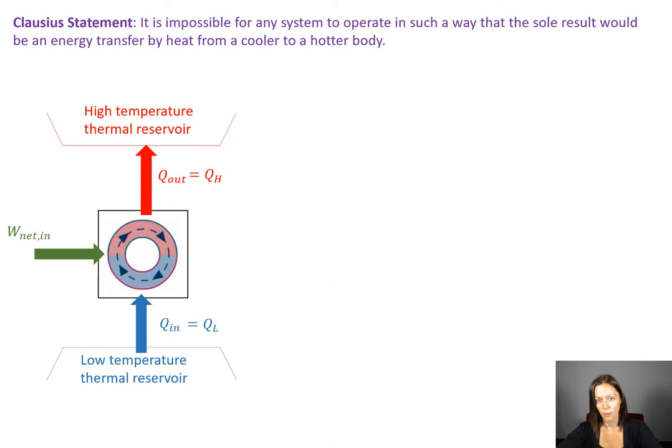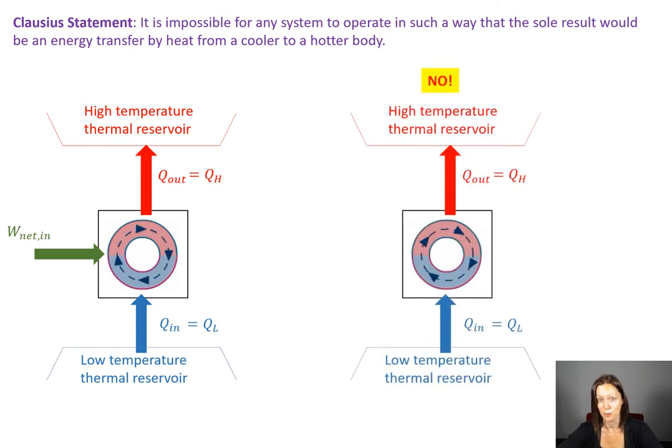what this tells us is that we can't run the refrigerator without plugging it in. You have to have some amount of work input into this system in order to move heat in the direction that it does not want to go from cold to hot. In other words, the work net in cannot be equal to zero.